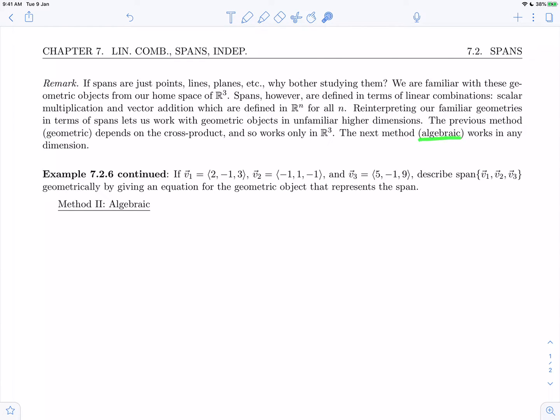The next method, the algebraic method that we're about to do, will work in any dimension. So let's go back and look at example 7.2.6. We were asked if we had vectors v1, v2, and v3 to describe the span of these vectors geometrically by giving an equation for the geometric object that represents the span. We're going to let w be an arbitrary vector in R3, so x, y, and z.